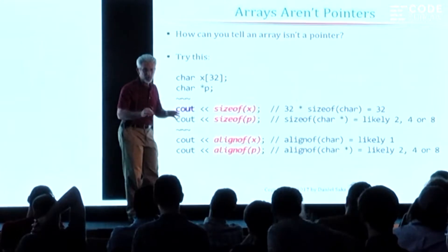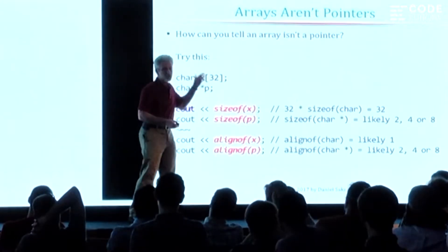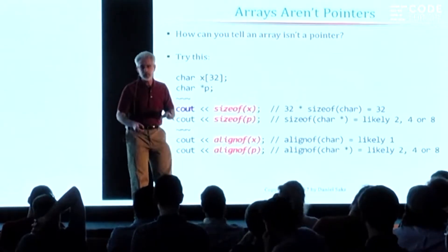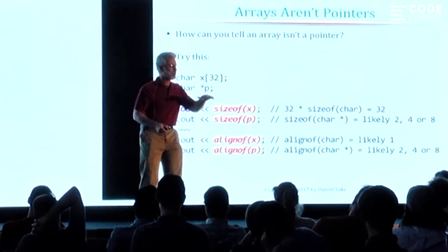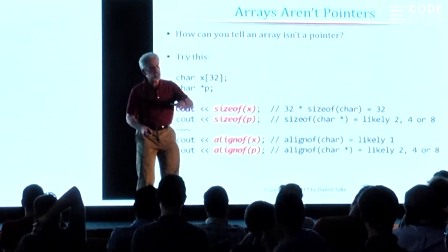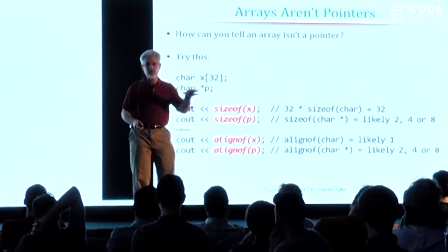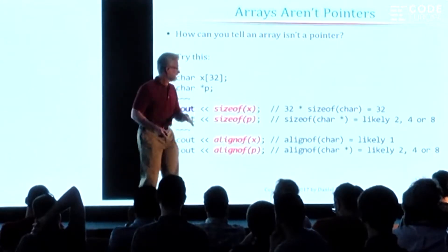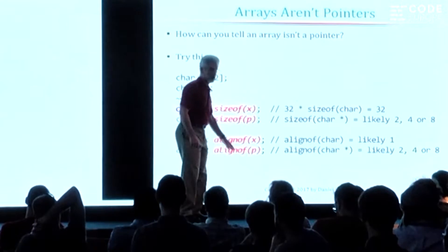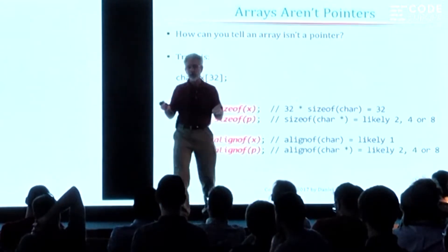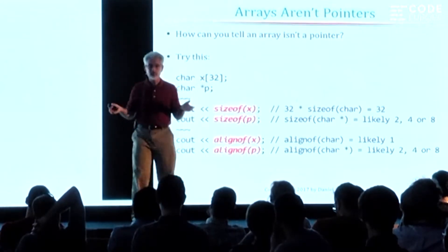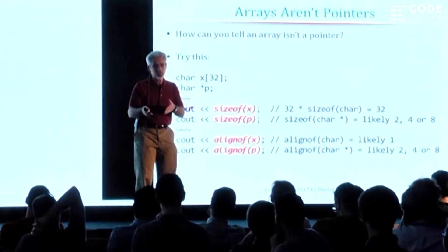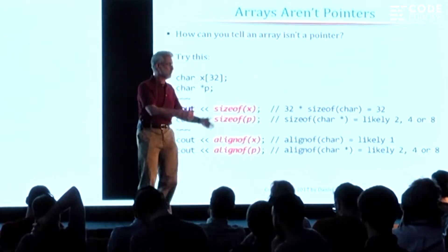The key takeaway here is that almost all the situations where you use an array in an expression, the compiler will apply the array-to-pointer conversion to treat that array as if it's a pointer for that expression. But in the sizeof expression and the alignof, the array-to-pointer conversion doesn't happen. This is one of the few places where you can tell that an array is not a pointer.